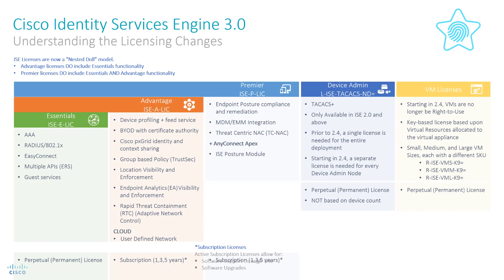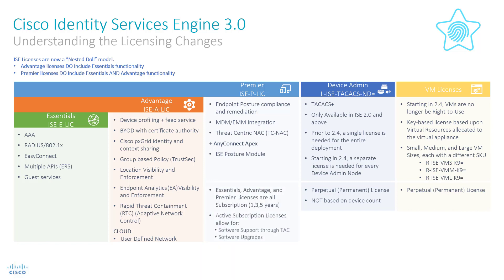Now onto the big change that came about with ICE 3.0. The lowest licensing level is no longer a permanent license — ICE Essentials is now a subscription-based license. Once you upgrade to ICE 3.0, your licenses will be converted to the new tiers, and your Base licenses, which are now Essentials, will expire on October 31, 2023.